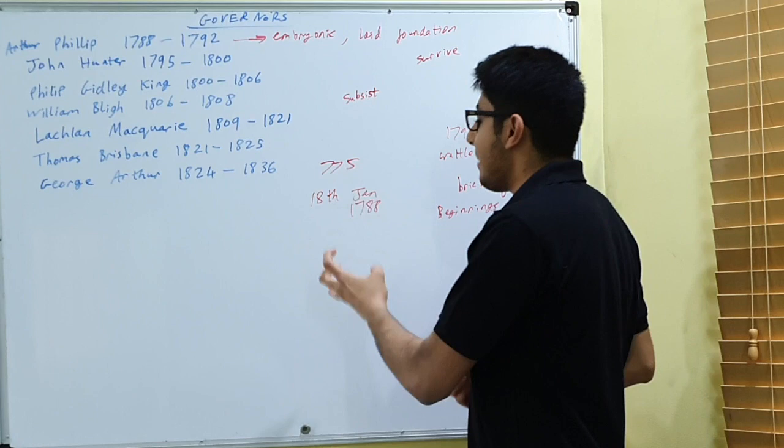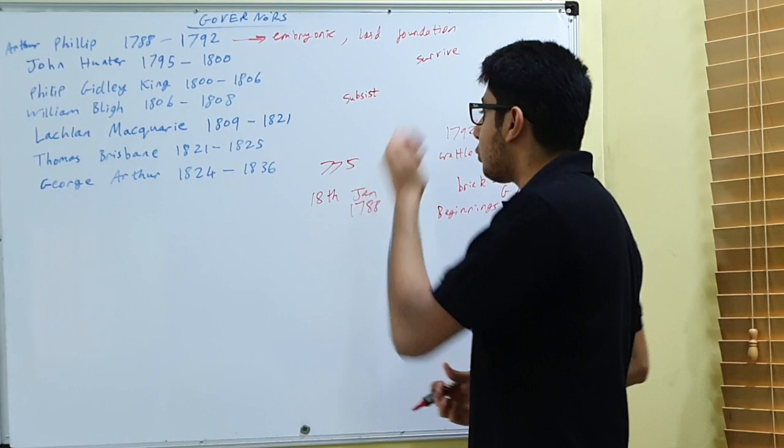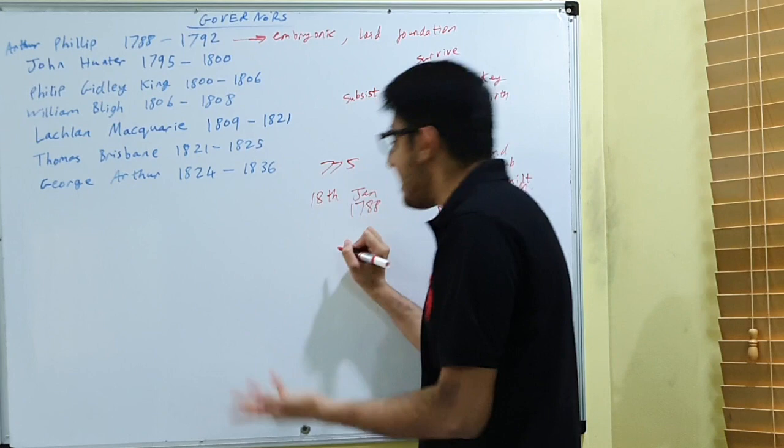You had a class of people who had no agricultural or economically viable skills, and yet Governor Phillip was able to use them. He was able to look at what he had and use it effectively to create a surviving colony.